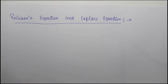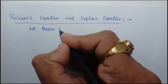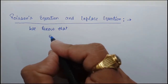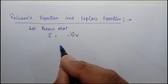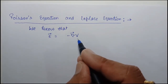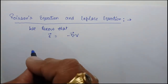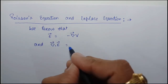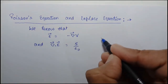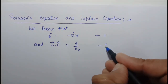In this lecture, we will discuss Poisson equation and Laplace equation. We know that E equals minus del V, where E is the electric field and V is the scalar potential. So, electric field equals minus the gradient of scalar potential — this is equation one. And del dot E equals rho over epsilon naught, meaning the divergence of electric field equals rho over epsilon naught — this is equation two.